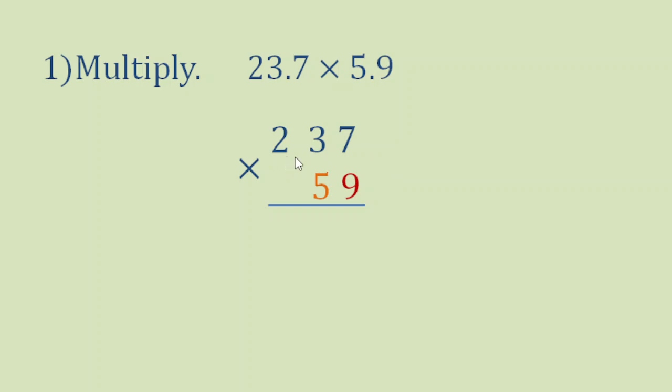This first factor 237 is what we call the multiplicand, while the second factor 59 is what we call the multiplier. Now since we don't have decimal points, we will just follow rule in multiplying whole numbers.